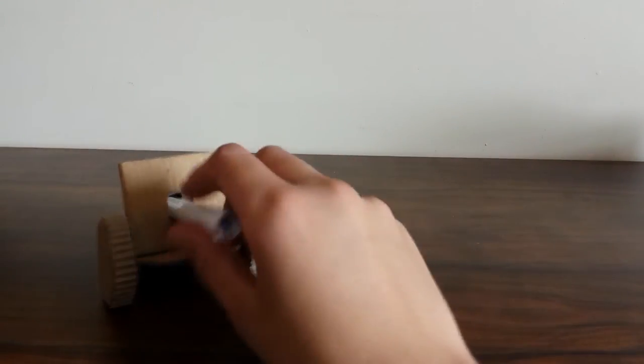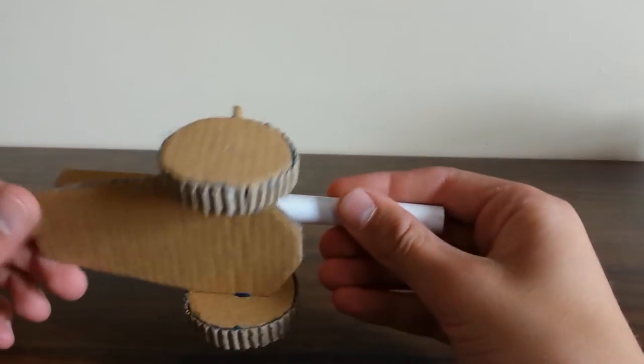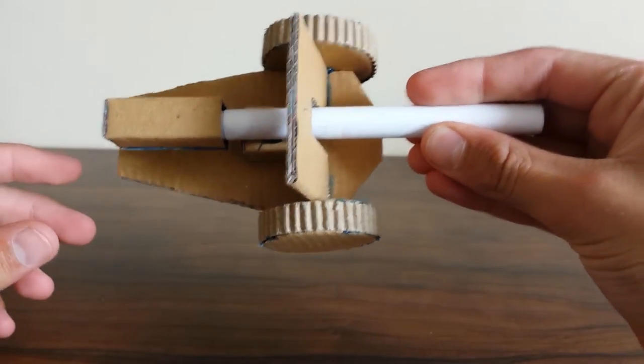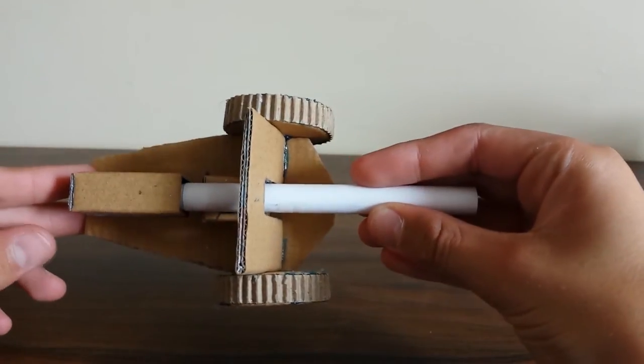So guys, the features are - the main one is the wheels. It's just a circle with corrugated cardboard and that is it.